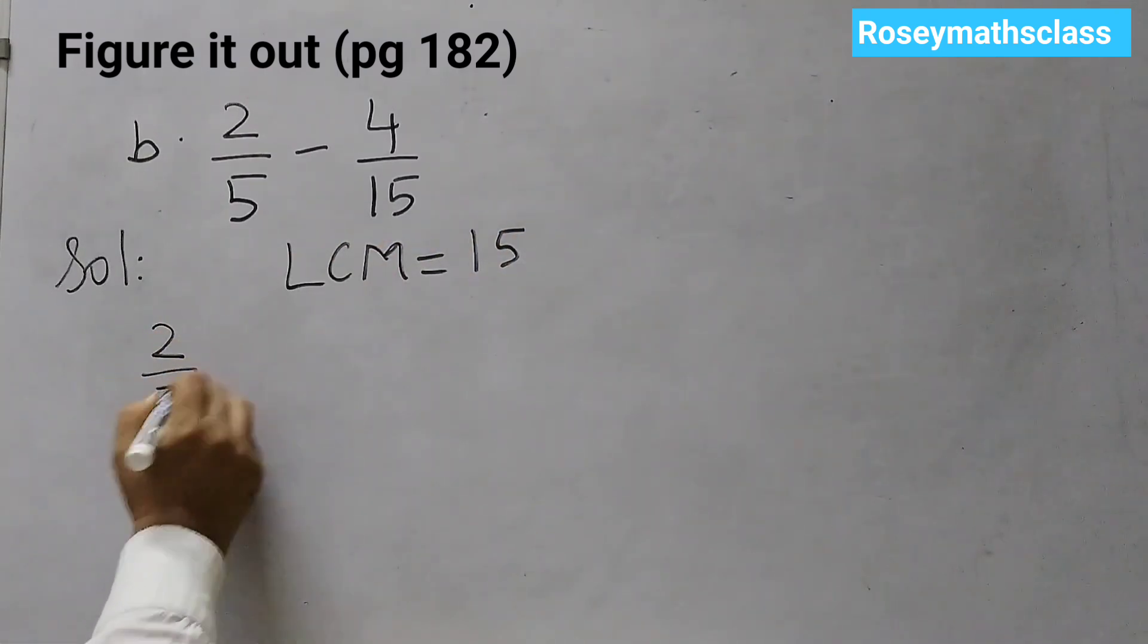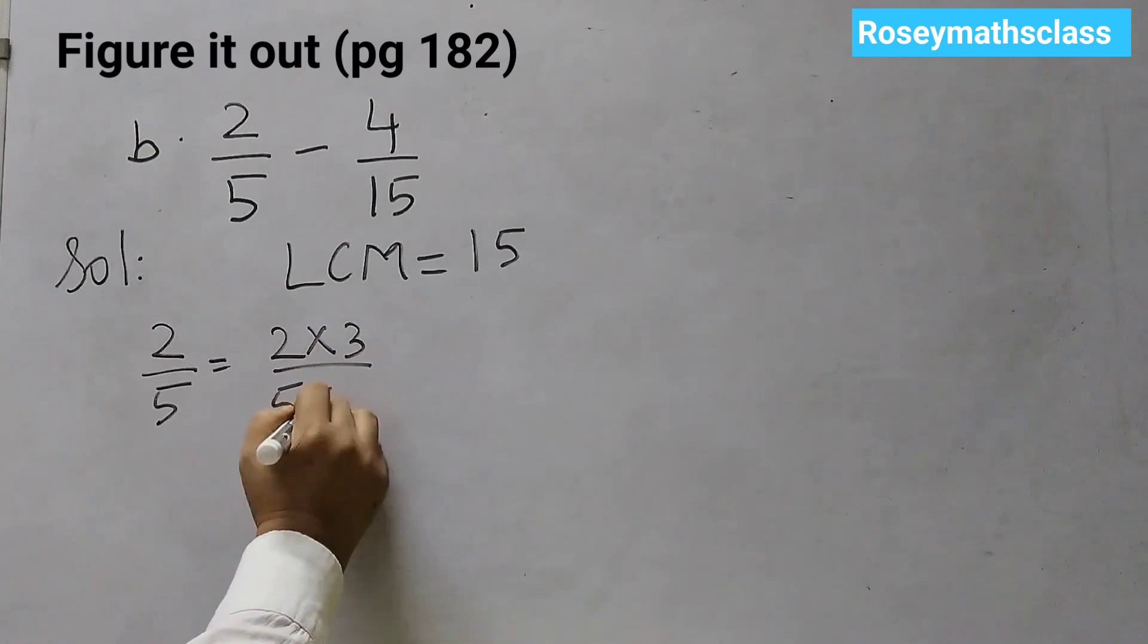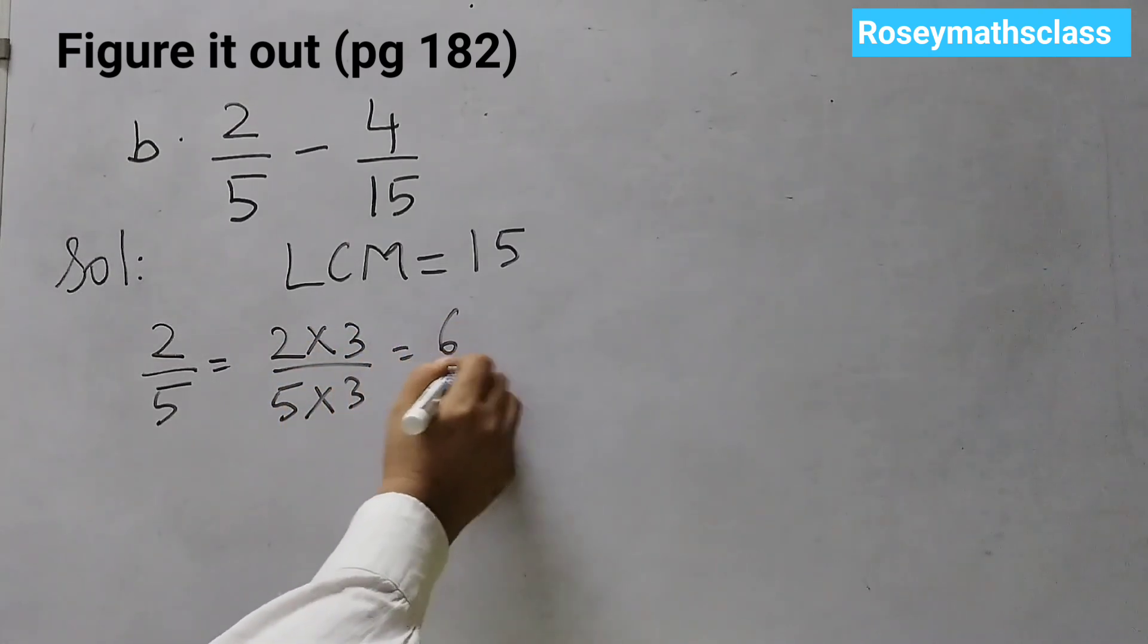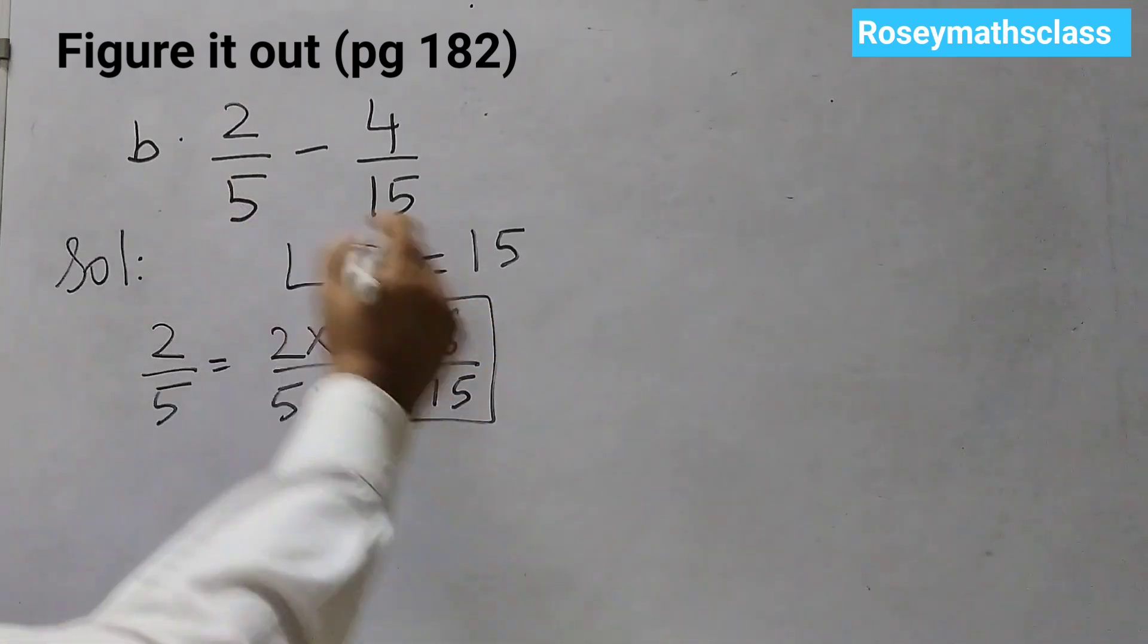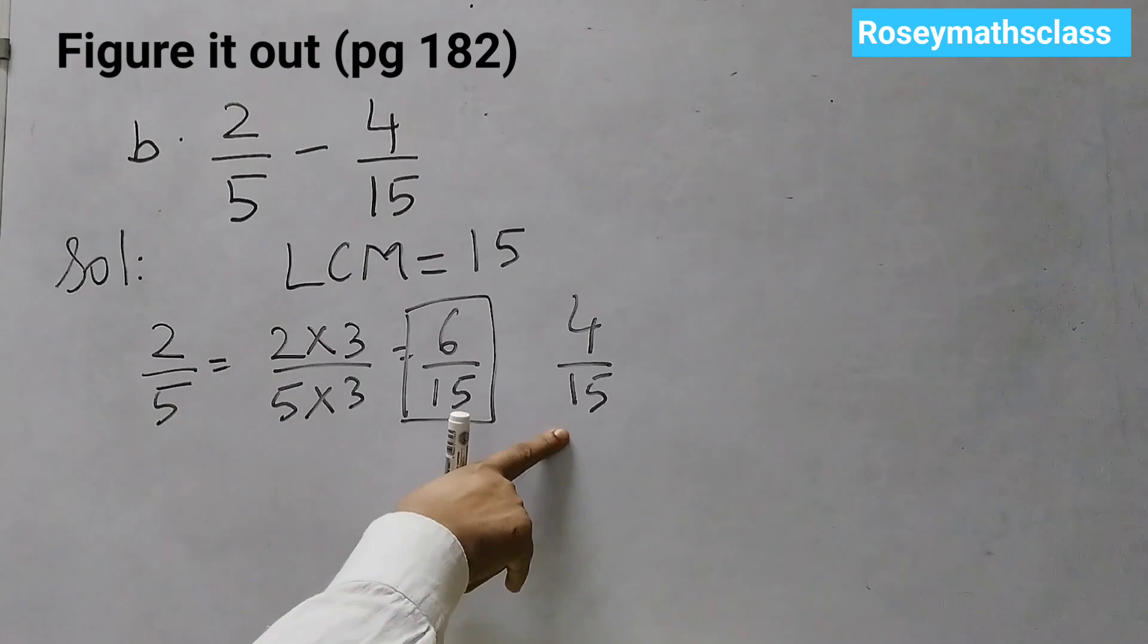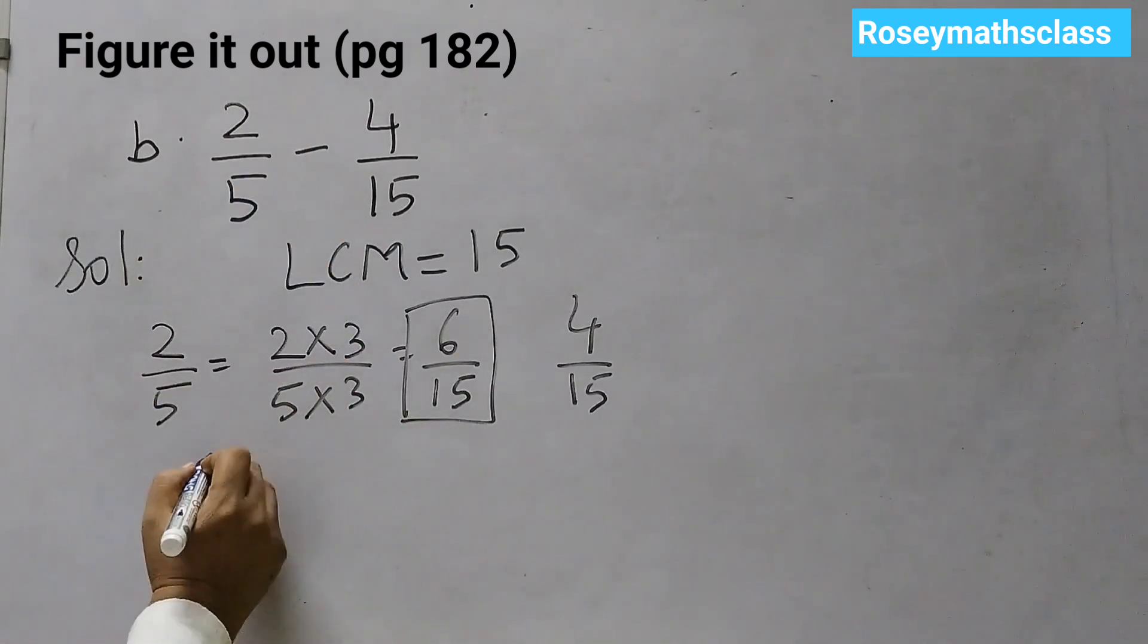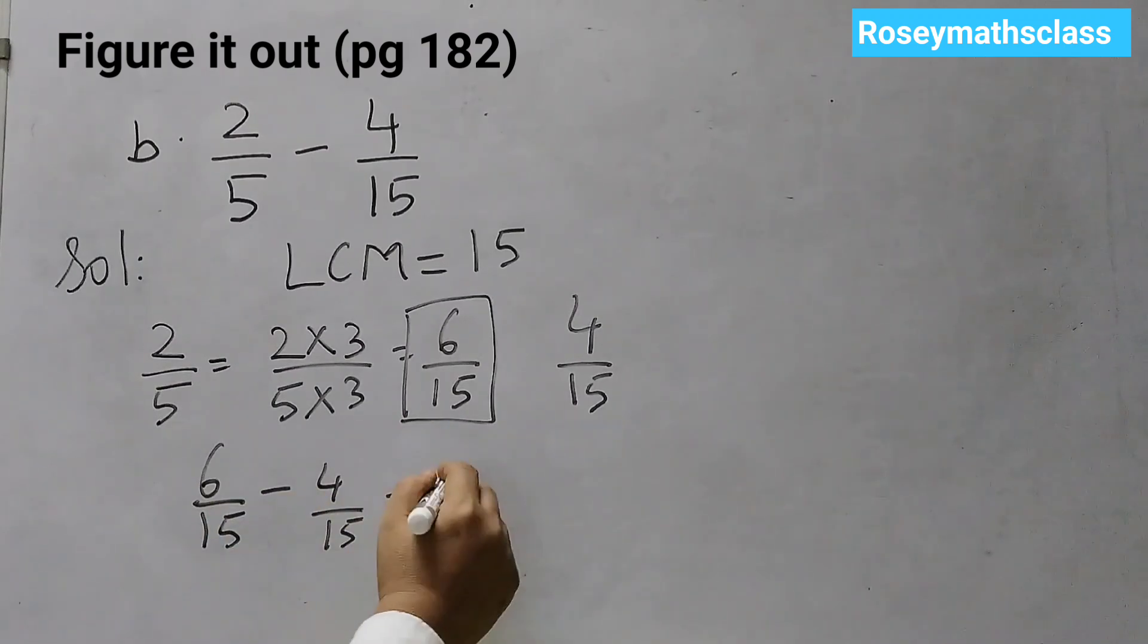Now 2 upon 5, we will multiply by 3. 2, 3's are 6, 5, 3's are 15. And this one, we will remain as it is because we already have 15 in the denominator. Now we will subtract. So 6 upon 15 minus 4 upon 15. 6 minus 4 is 2. So that's 2 upon 15. And that's the answer for the second one.